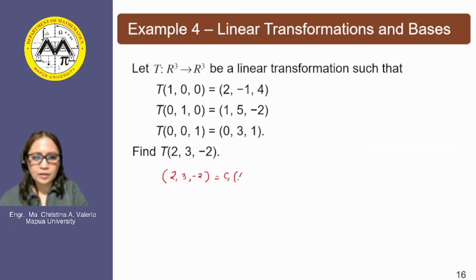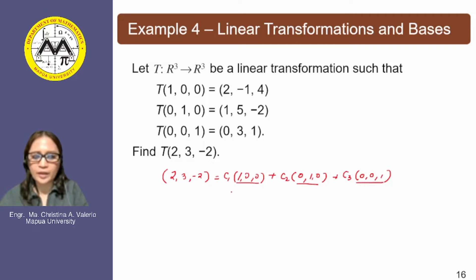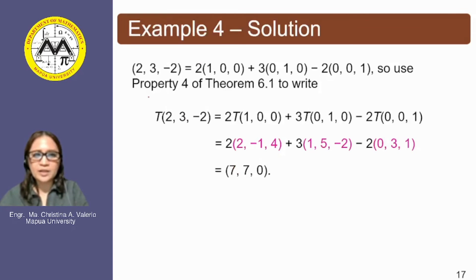We express the vector as c₁ times (1, 0, 0) plus c₂ times (0, 1, 0) plus c₃ times (0, 0, 1). Since these are standard basis vectors, the value of c₁ is simply 2, c₂ is 3, and c₃ is −2. We then use Theorem 6.1 property four to write the image of the vector (2, 3, −2) as 2 times the image of the first vector plus 3 times the image of the second vector minus 2 times the image of the third vector.